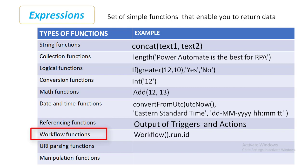Now we'll talk about workflow functions. Workflow functions are used to retrieve information about your flow and are closely related to referencing functions. One of the functions is called workflow(). For example, I'm using workflow().run.id to find out the ID of the currently running flow.